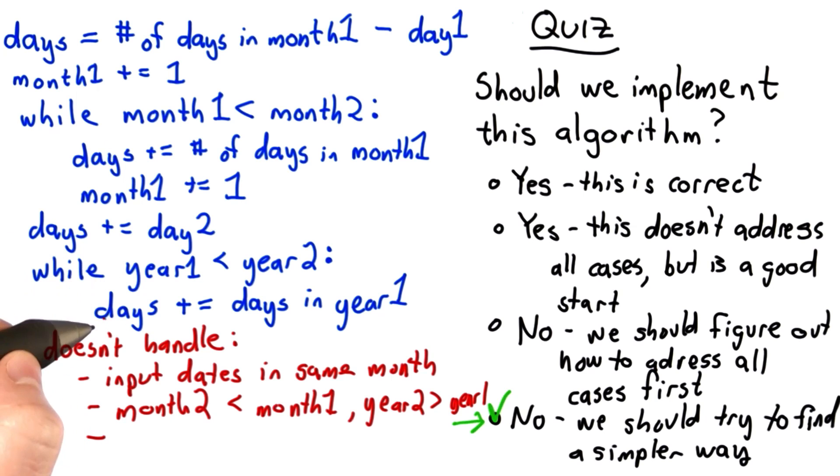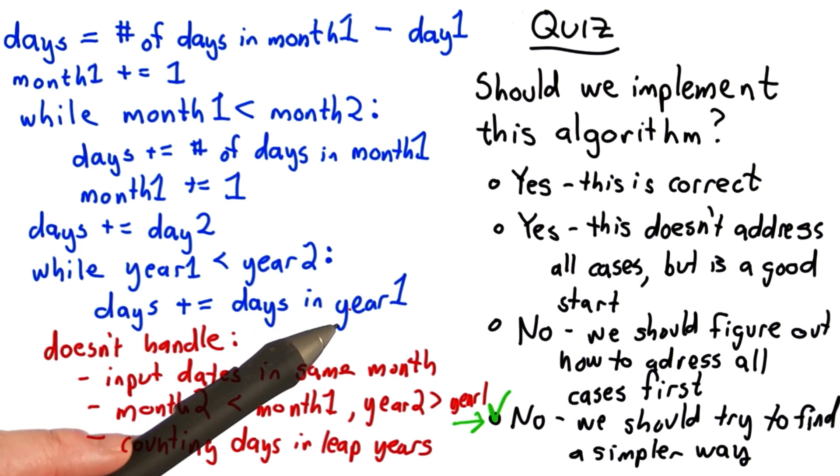The other thing it doesn't handle quite correctly is counting days in leap years. This loop where we add the days in year 1, we have to be careful depending on whether February is included based on what month we're in. Whether we should pay attention to the days in year 1 or the days in year 2. There's a lot of things it doesn't handle.